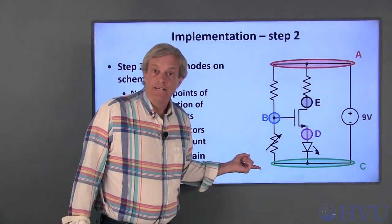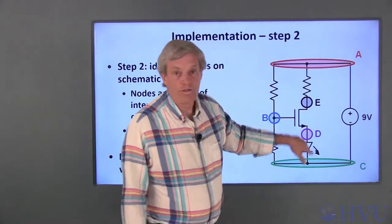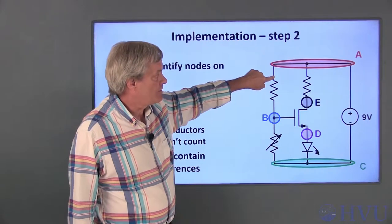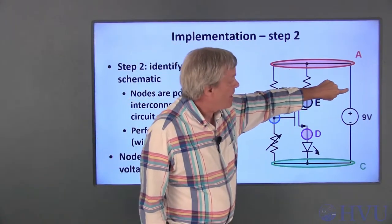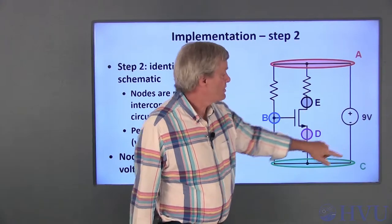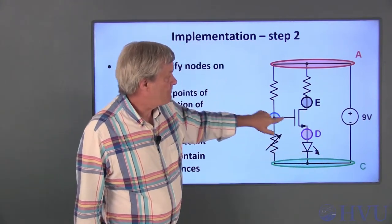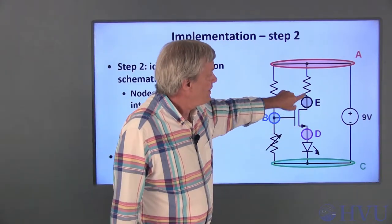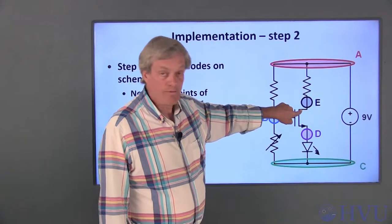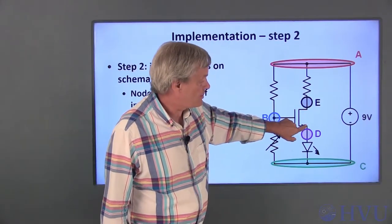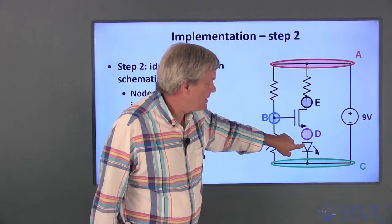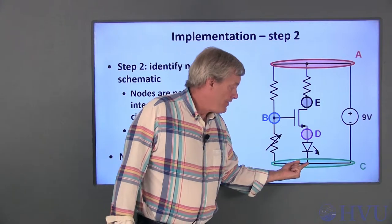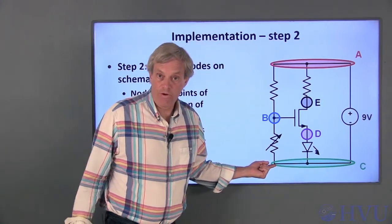These are the nodes I've identified on the circuit. The letters I've assigned to the nodes are arbitrary. Node A connects this terminal of this resistor, this terminal of this resistor, and the positive terminal of the 9V source. Node B connects the gate of the MOSFET to this terminal of the resistor and this terminal of the photocell. Node E connects this terminal of this resistor to the drain of the MOSFET, and node D connects the source of the MOSFET to the anode of the LED. Finally, node C connects the negative terminal of the voltage source, the cathode of the LED, and this terminal of the photocell.